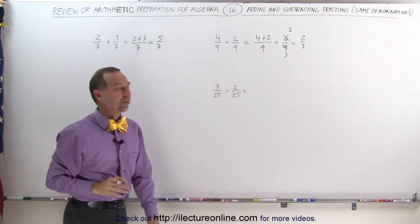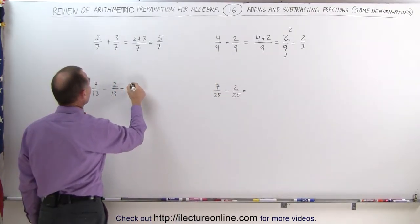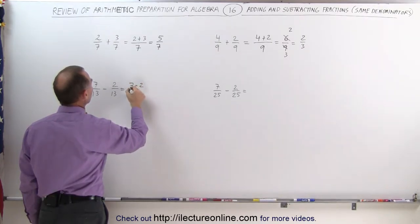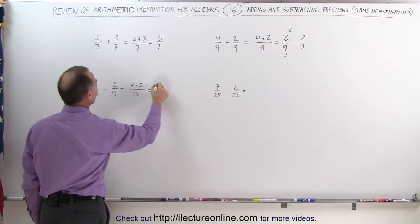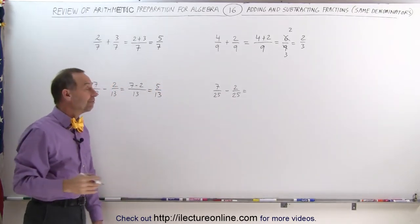Now let's subtract some fractions. Again, if the denominators are the same, this can simply be written as 7 minus 2 divided by the common denominator of 13. 7 minus 2 is 5, and the common denominator is 13. The answer is 5 thirteenths.